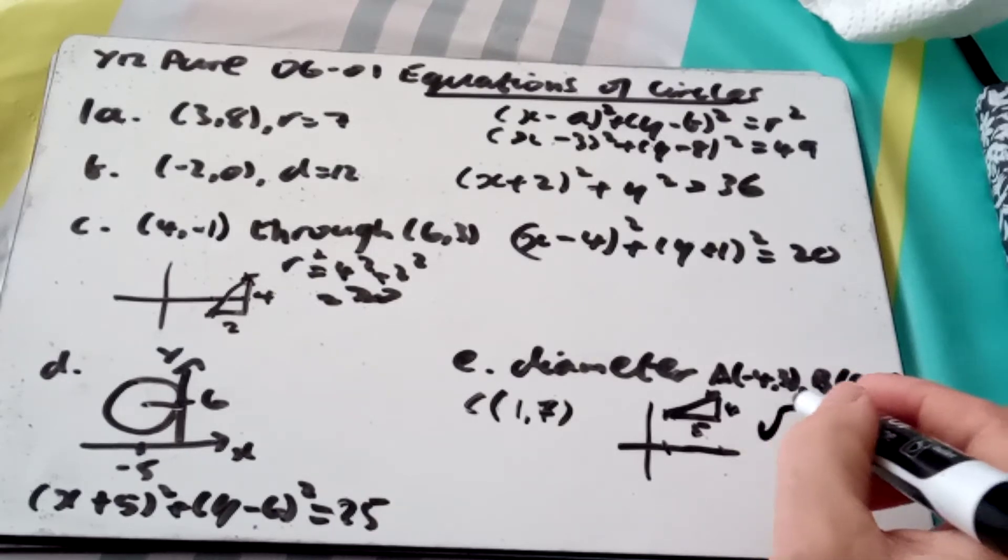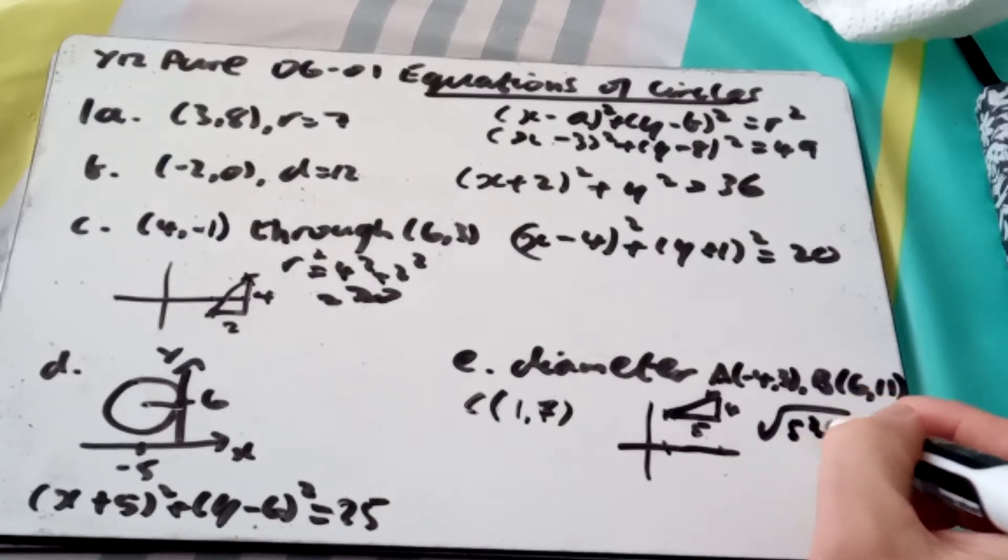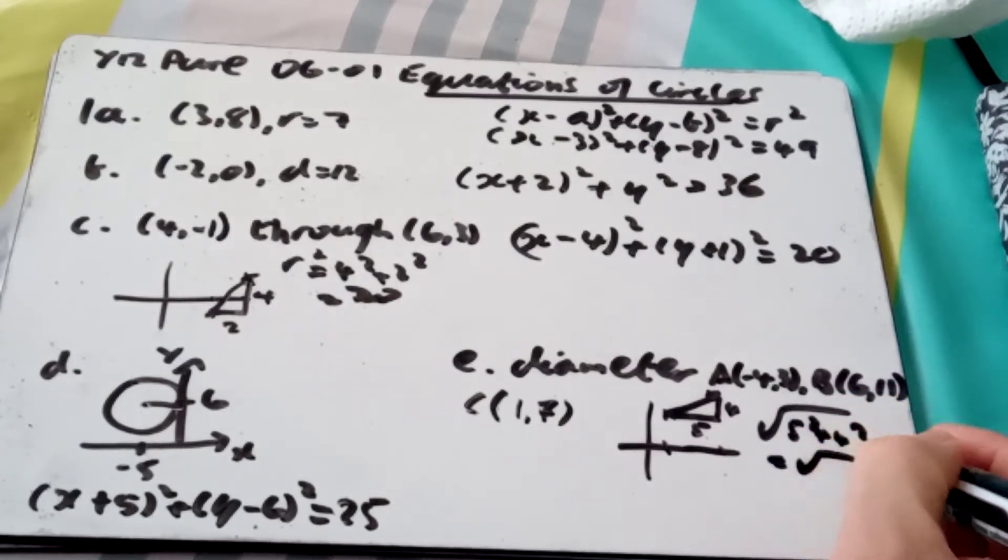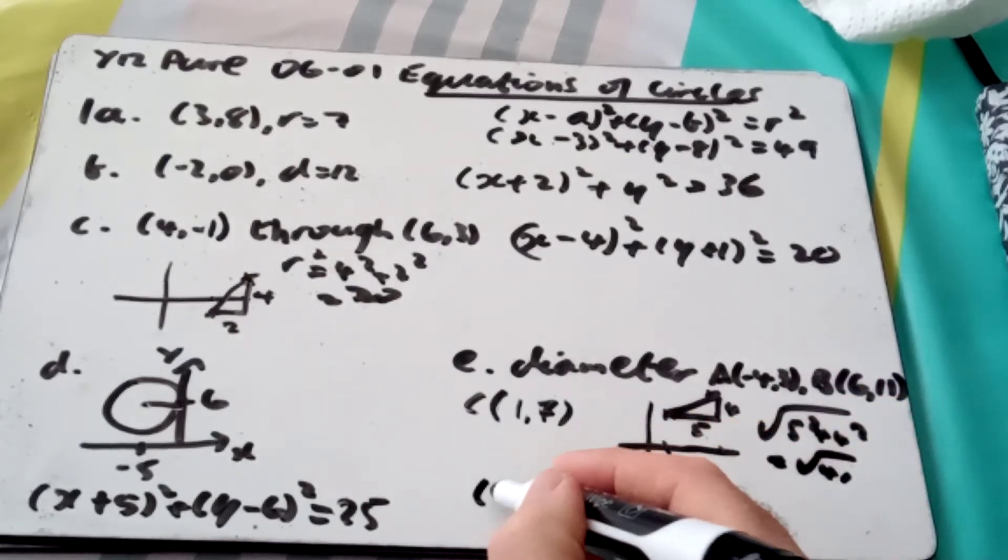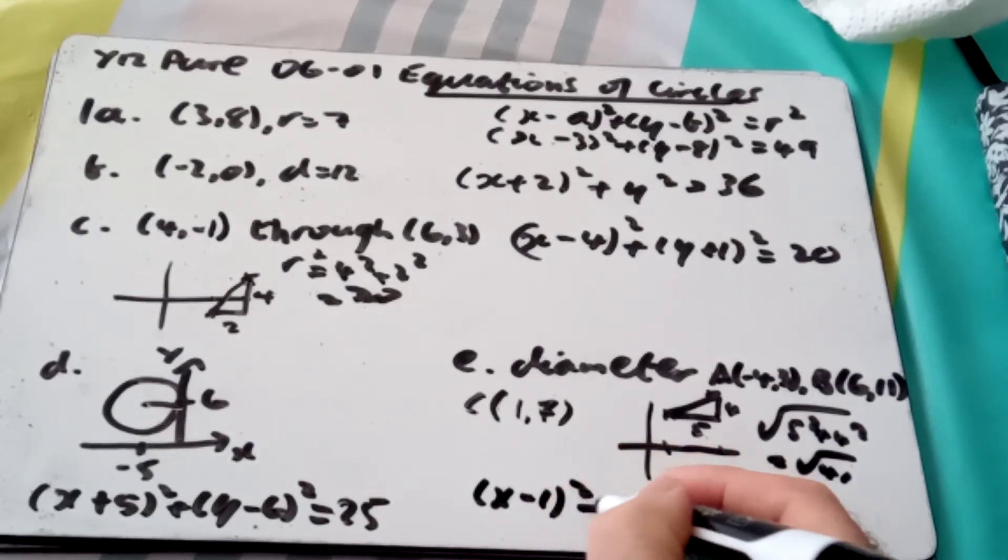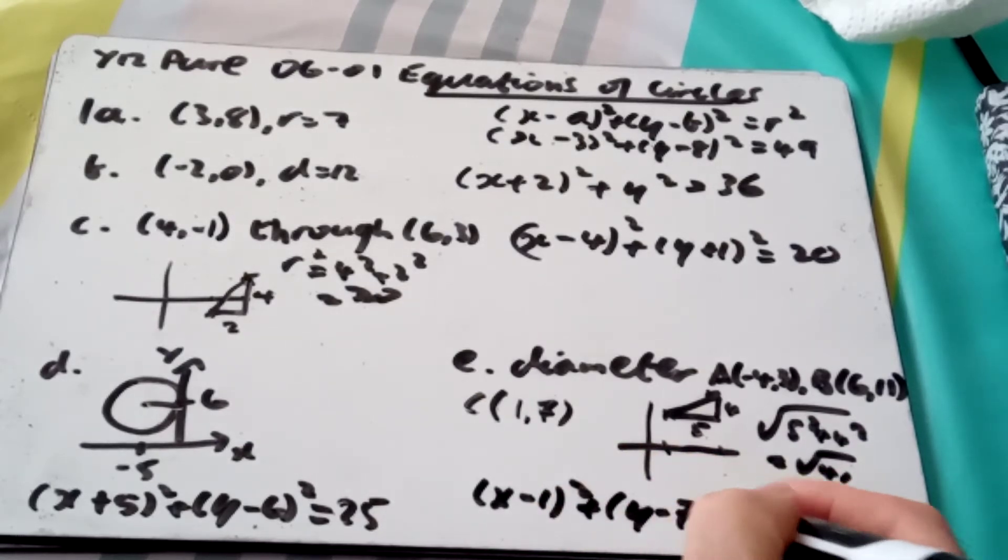So my Pythagoras, r is going to be √(5² + 4²), which is √41. So my equation is (x - 1)² + (y - 7)² = r², which is 41.